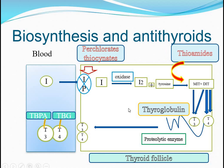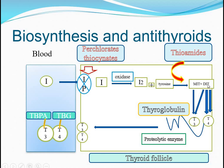The best drugs used clinically are the thioamides, which have a sulfur and amide linkage. They inhibit the oxidase enzyme, so the condensation of tyrosine with iodine does not happen, and consequently the synthesis of T3 and T4 will be less.